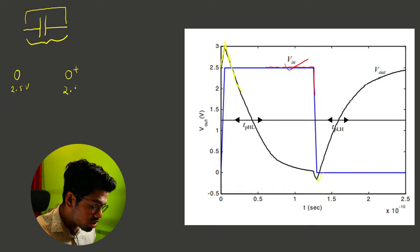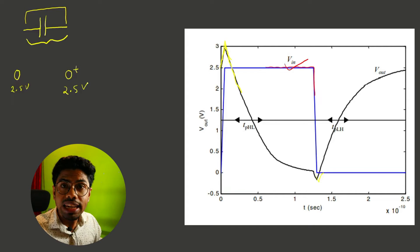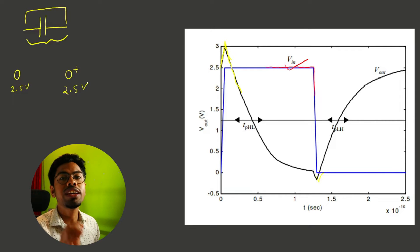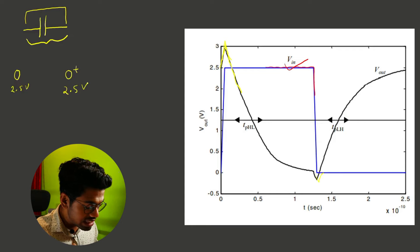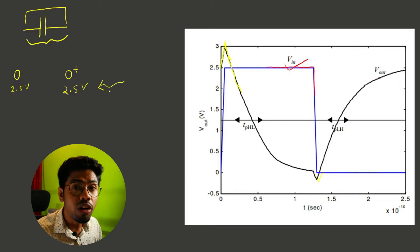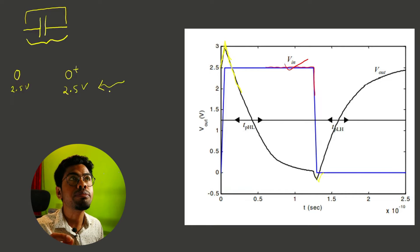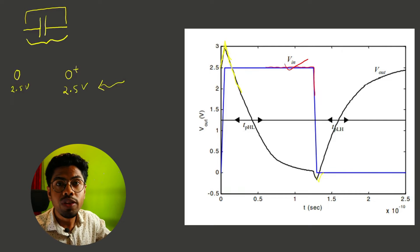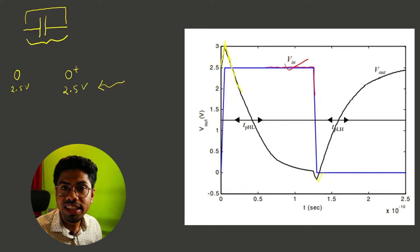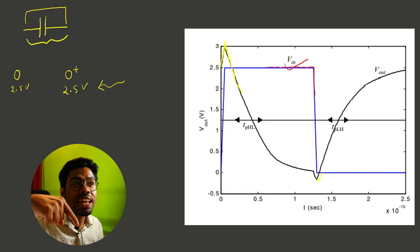then at zero plus second, the next moment, it will continue to be 2.5 volts irrespective of anything happening in the circuit. You can make any changes, it will be 2.5 only. This is the property of any capacitor.